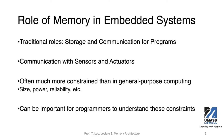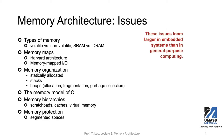We use memory for all kinds of stages or parts of design: for storing instructions, for storing data, sensor data, input data, and also for storing data that will be used to control actuators. For signal processing or any processing task, we need memory to store intermediate variables. So memory is very important in the embedded system.